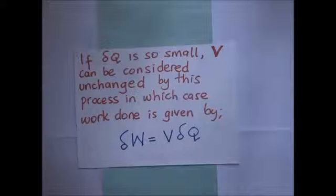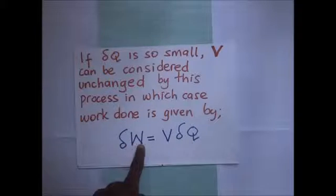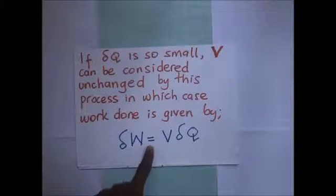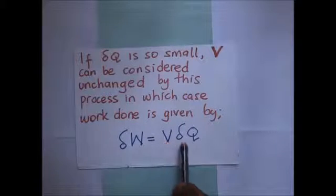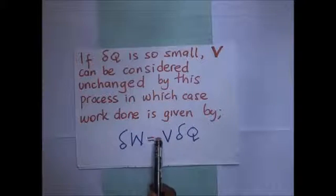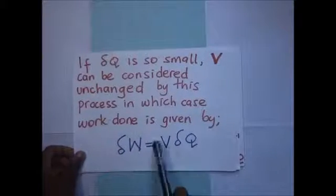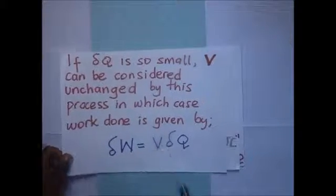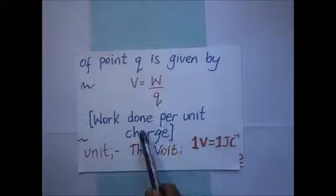By this process, the small work done will be equal to the potential difference — which we are assuming is unchanged — multiplied by the small change in charge dq. This comes from the definition that potential difference is the work done per unit charge, so when we make W the subject of the formula, work done equals V times dq.